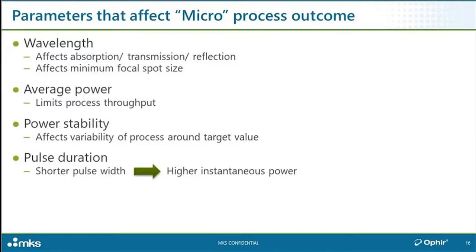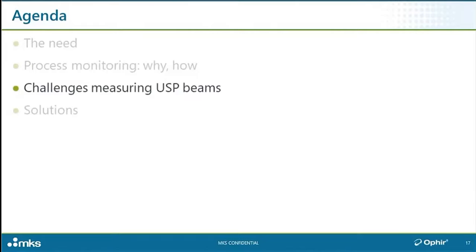Pulse duration has a critical effect on microprocessing. As the laser pulses become shorter, the instantaneous power during each pulse becomes increasingly larger. In today's discussion we're going to focus primarily on power and power stability measurement. For measuring pulse duration, high-speed photodetectors with output to an oscilloscope or similar instrument are typically used — but we won't focus on those here.